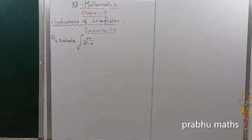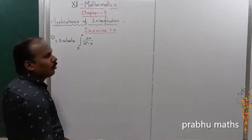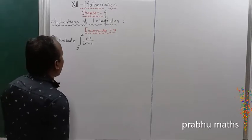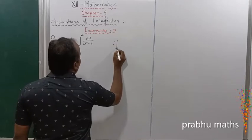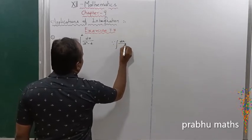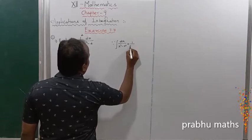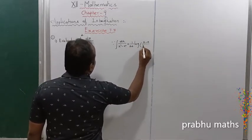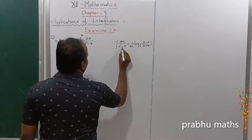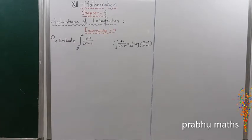This is problem 7.3, first subdivision. We need to find the integral from 3 to 4 of dx divided by x squared minus a squared. By using the standard formula, the integral of dx divided by x squared minus a squared equals 1 by 2a into log of x minus a divided by x plus a. This is the direct formula.